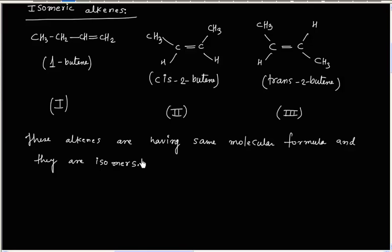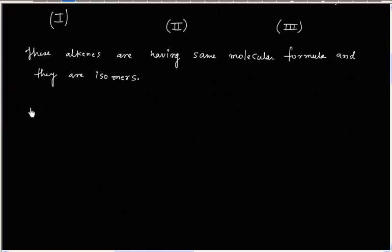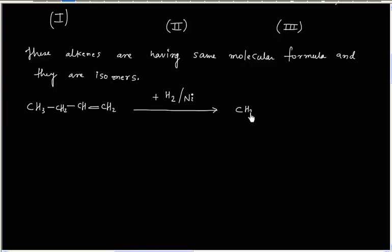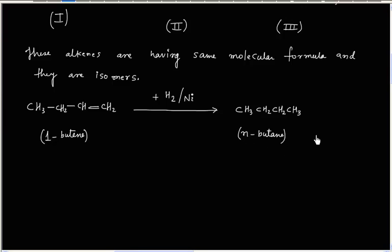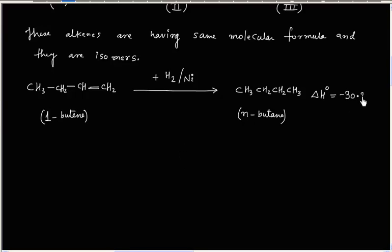If we do hydrogenation of these alkenes, we will get the same products in all cases. For example, if we hydrogenate 1-butene by adding hydrogen, we get normal butane. The standard heat of hydrogenation for this reaction is minus 30.3 kilocalorie per mole, and this value comes from experiment.